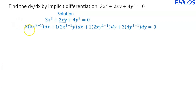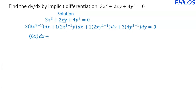Let's simplify. For the first term, 2 minus 1 gives 1, and 2 times 3 is 6, so that gives us 6x dx. For the 2xy term differentiated with respect to x: 1 minus 1 is 0, and anything to the power of 0 is 1, so x to the power of 0 is 1. We get 2 times 1 times y, which is 2y dx.